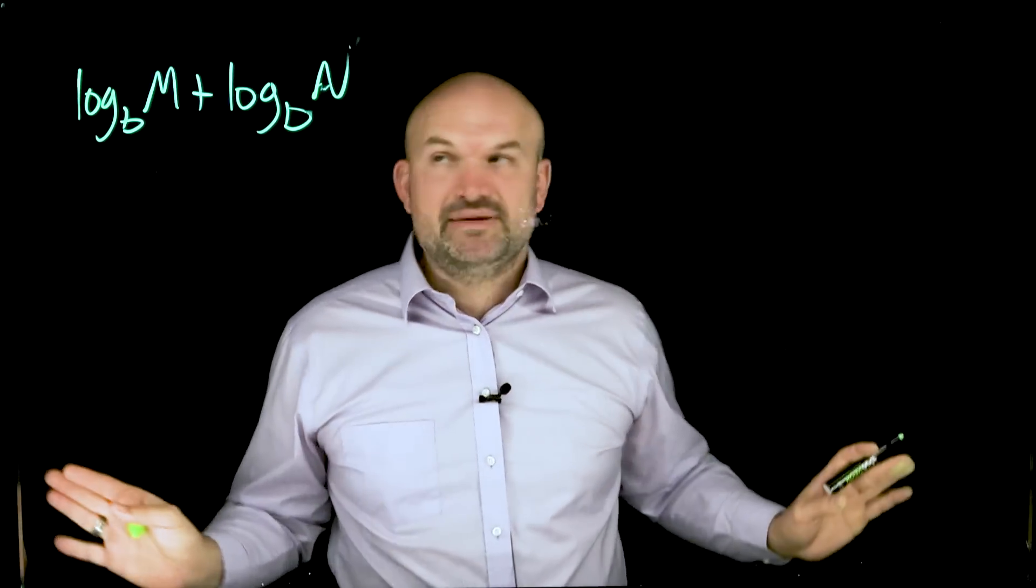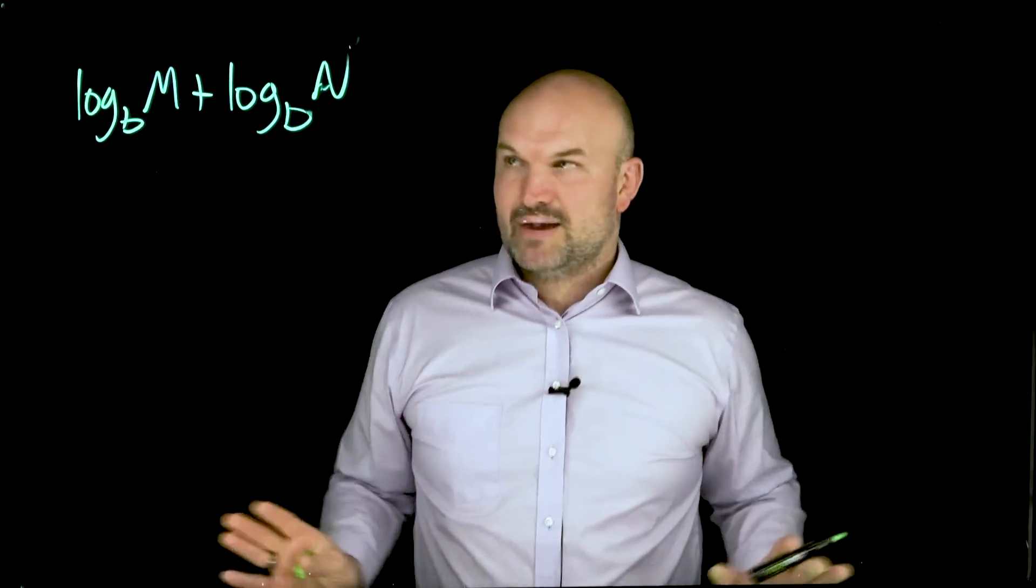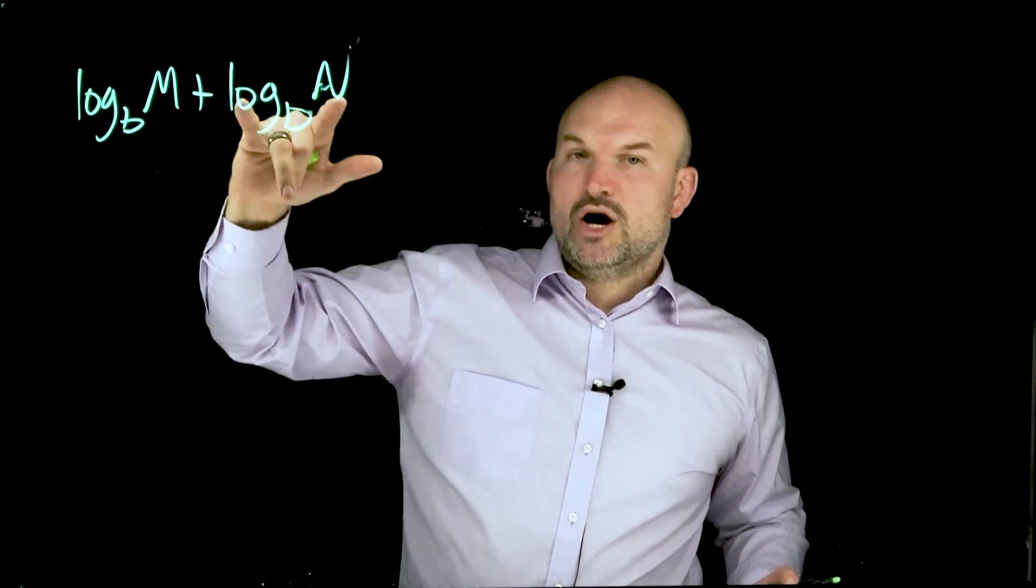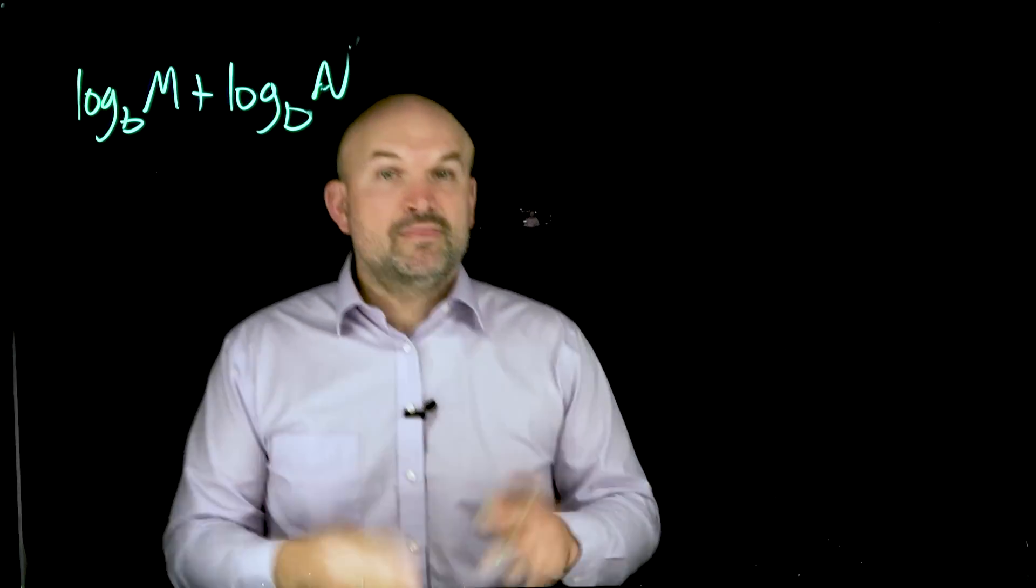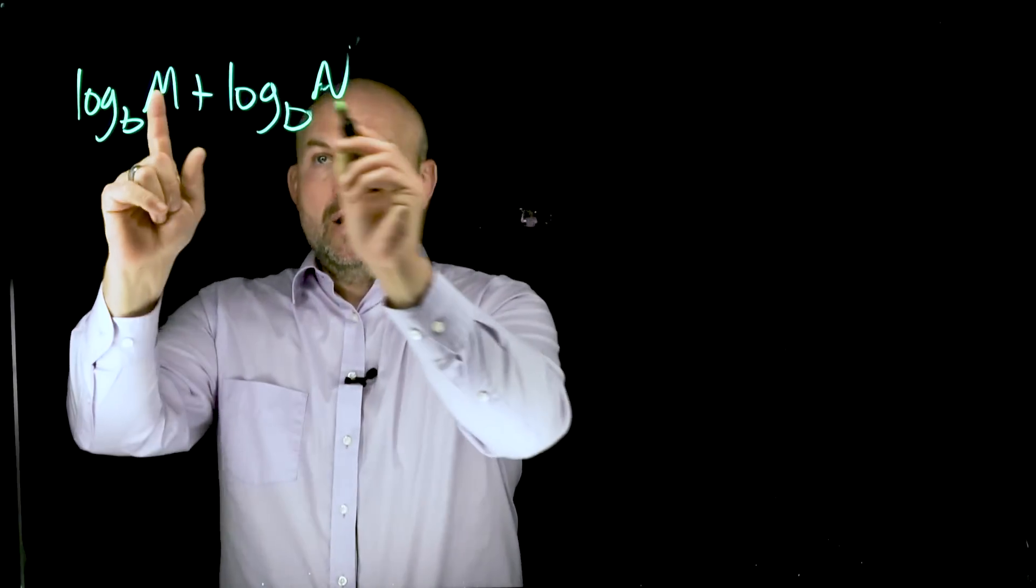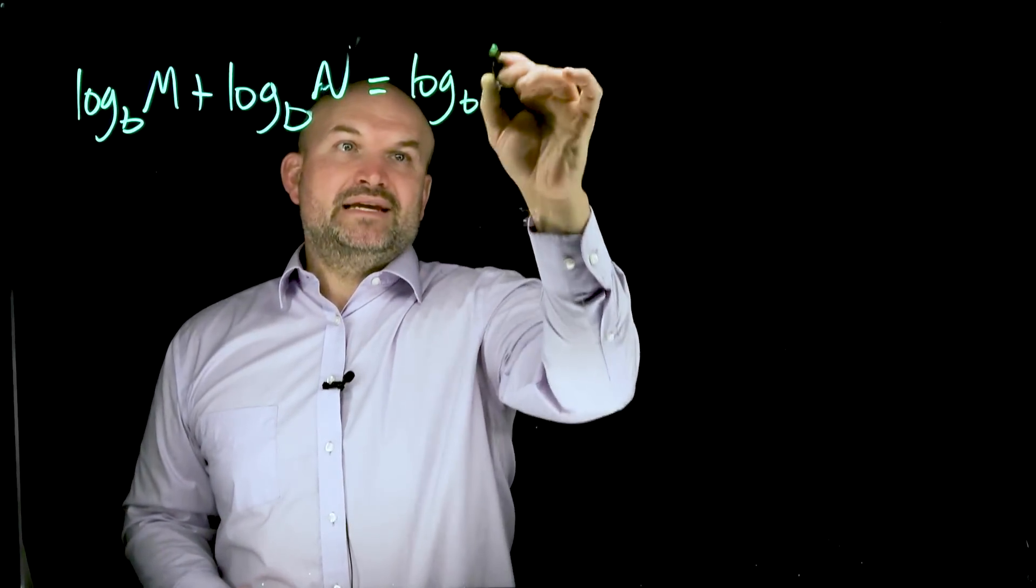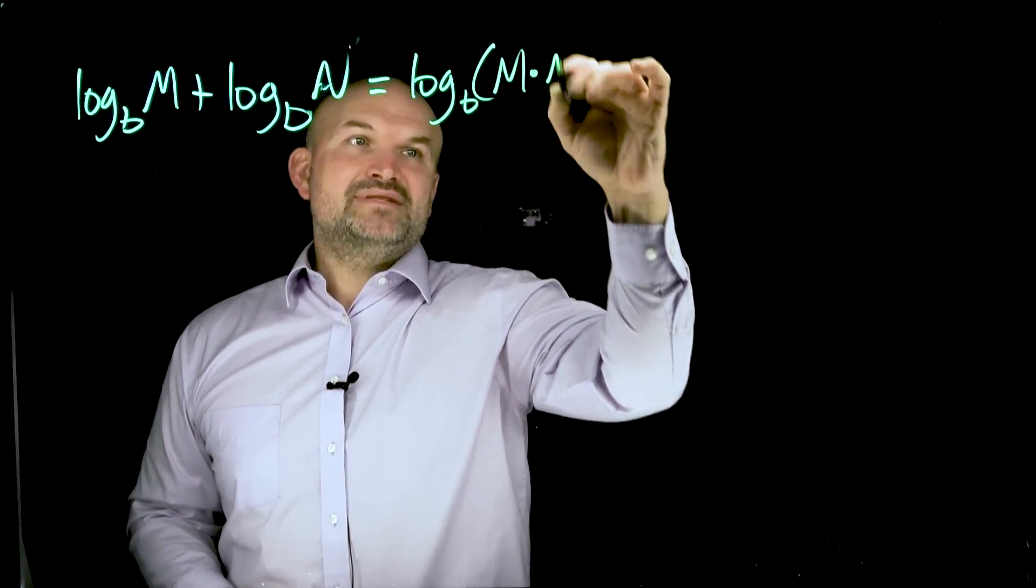If you do not have the bases being the same, you cannot apply this property. So when you have logs with the same bases and you're adding them, you have your two arguments. That is now going to turn into the product of those two arguments. So this plus this is now equal to log base B of M times N.